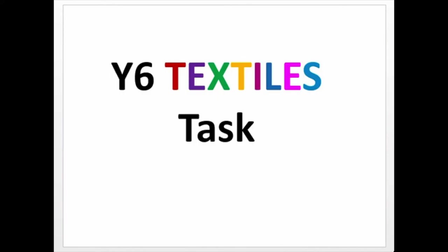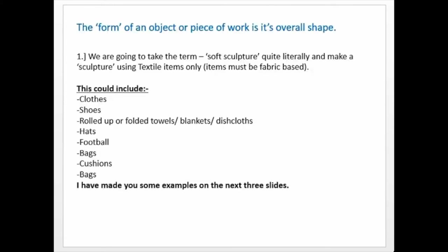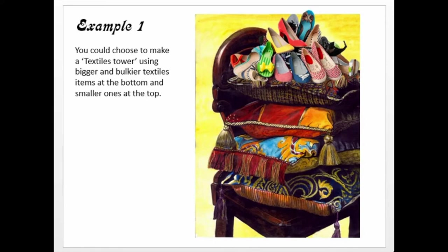So what you're going to do is have the chance to do some kind of textile sculpture or textiles tower. This could be a pile of textile items — you can include clothes, shoes, rolled-up tiles and blankets, hats, football things like that. I've made some examples here for you.